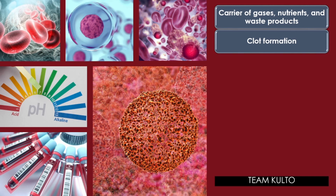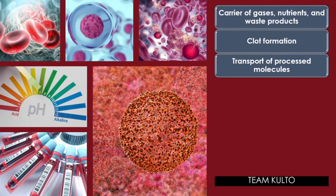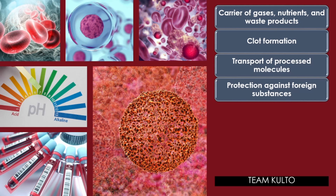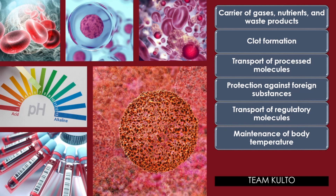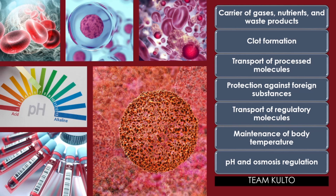Other functions of the blood include: clot formation — clotting proteins help stem blood loss when a blood vessel is injured. Transport of processed molecules — most substances are produced in one part of the body and transported in the blood to another part. Protection against foreign substances — antibodies help protect the body from pathogens. Transport of regulatory molecules — various hormones and enzymes that regulate body processes are carried from one part of the body to another within the blood. Maintenance of body temperature — warm blood is transported from the inside to the surface of the body where heat is released. And pH and osmosis regulation — albumin is an important blood buffer and contributes to osmotic pressure of blood, which acts to keep water in the bloodstream.